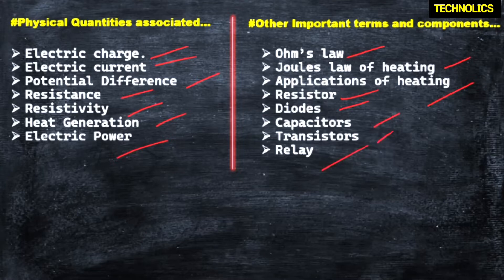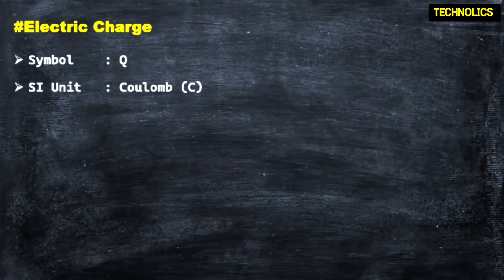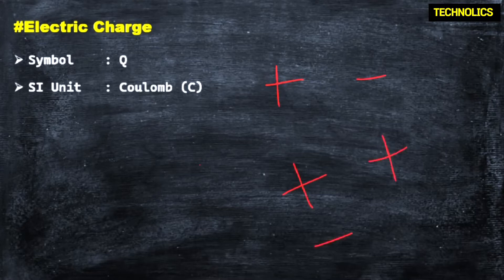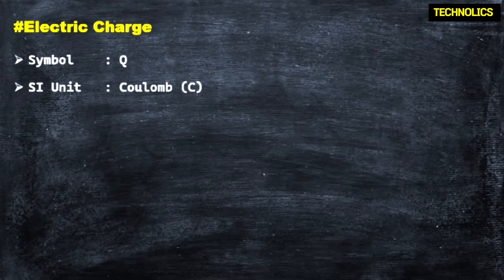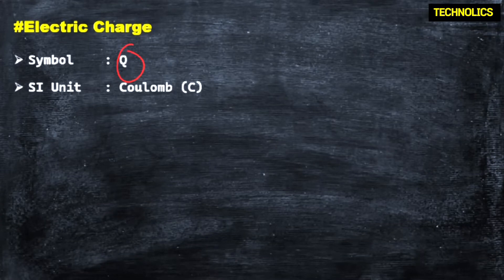Just feel the concept. First of all, electrical charge. What is electrical charge? Basically, we have positive charge and negative charge. Positive and positive repel, negative and negative repel, but positive and negative attract. Like charges repel, unlike charges attract.